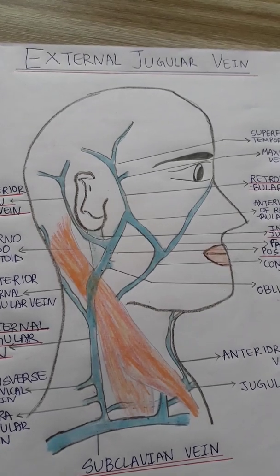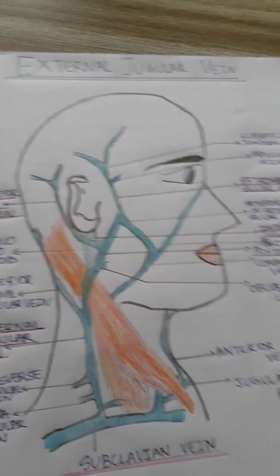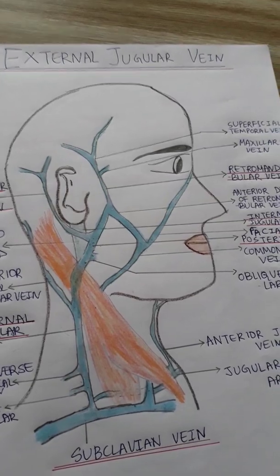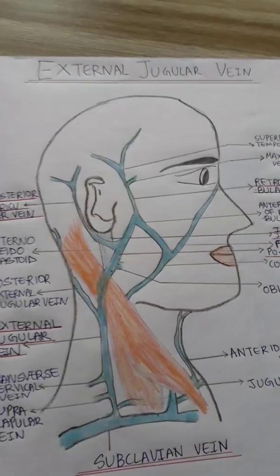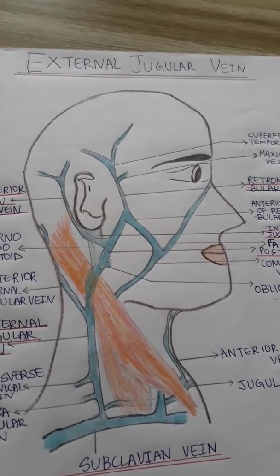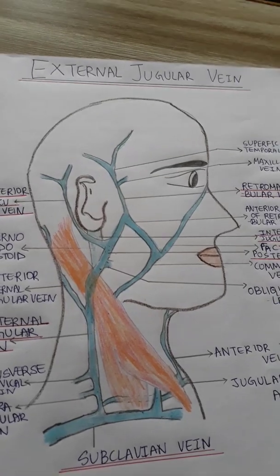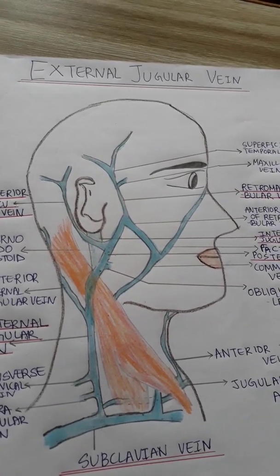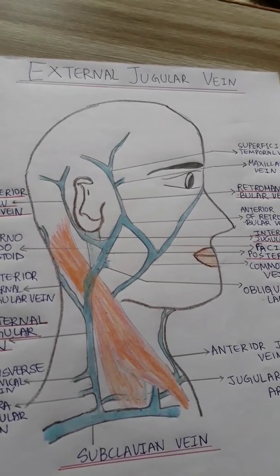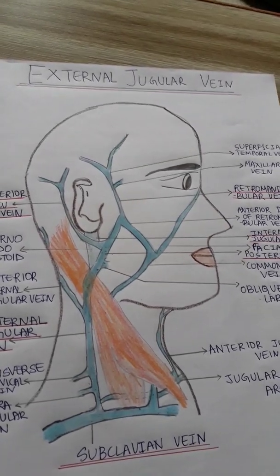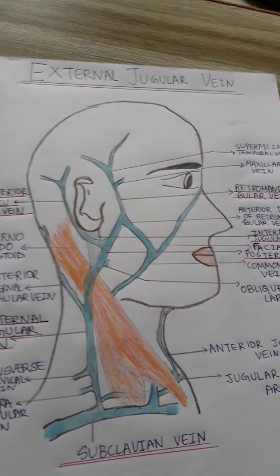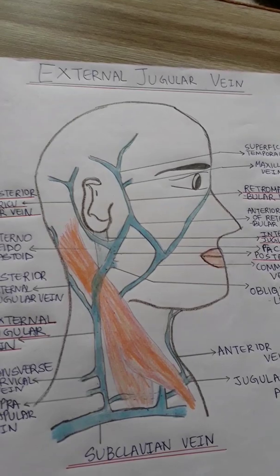Hello everyone and hello all my friends. Today we'll be discussing the external jugular vein. It is one of the most commonly asked questions for three or five marks, and its applied anatomy is also very important. I'll be discussing its origin, course, and tributaries today. Applied anatomy will be posted in part two of the lecture.